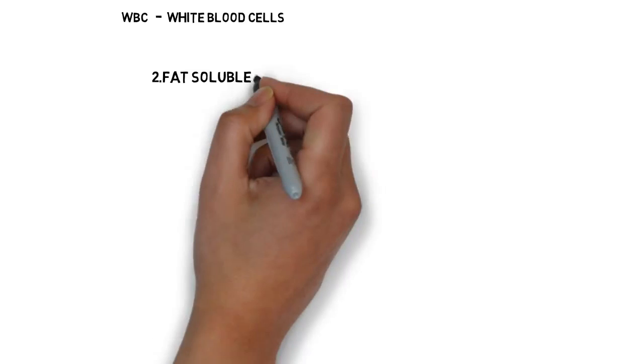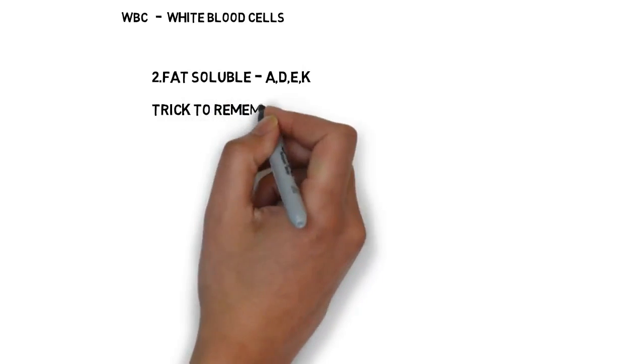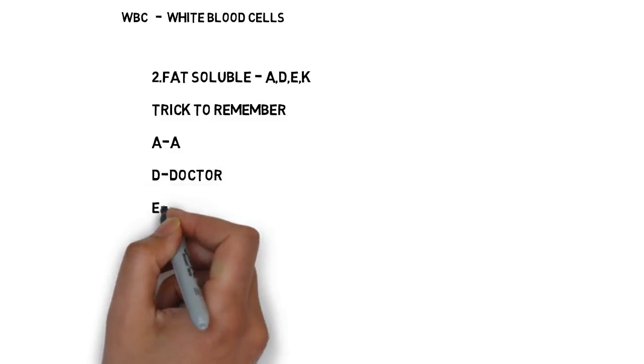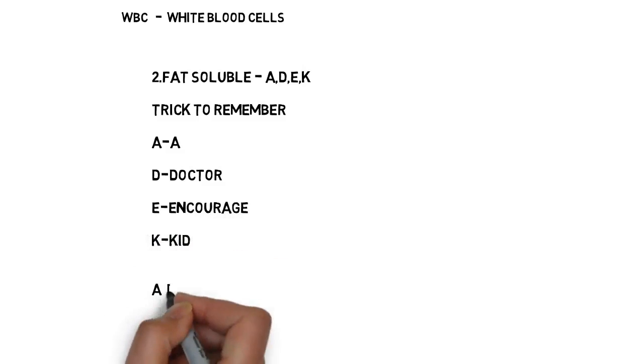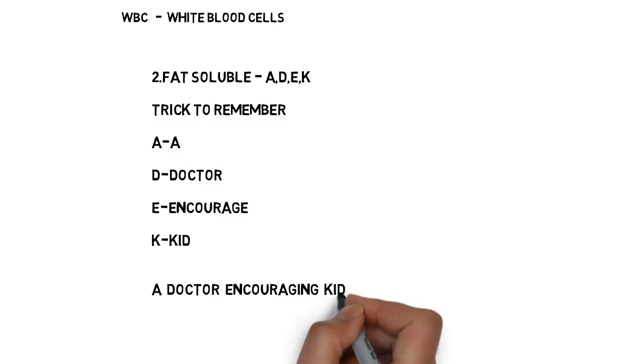Let us see the next one. What are fat soluble vitamins? A, D, E, K. But how to remember these vitamin names? See, A stands for, let us assume A stands for A. D stands for doctor. E stands for encourage. K stands for kid.